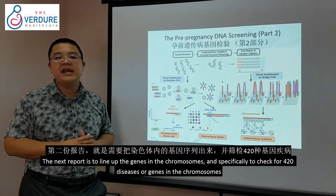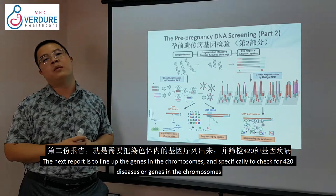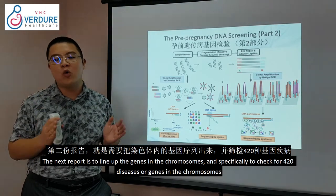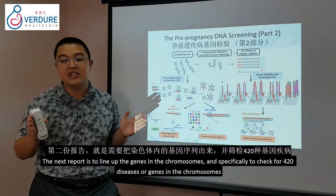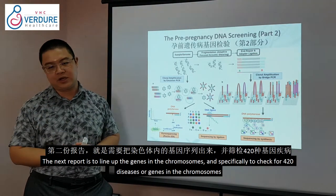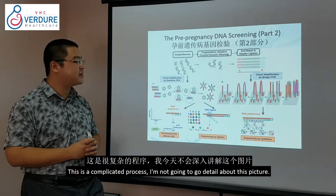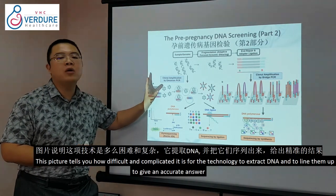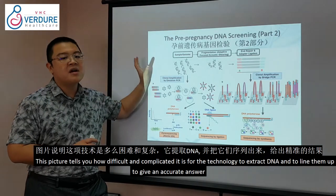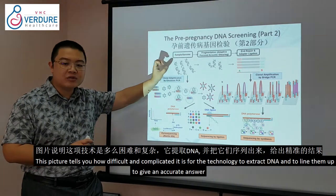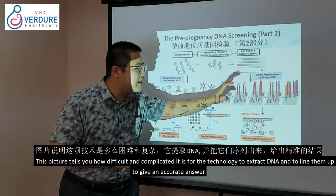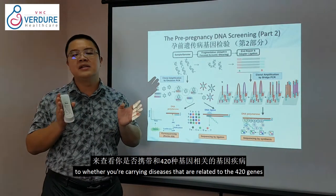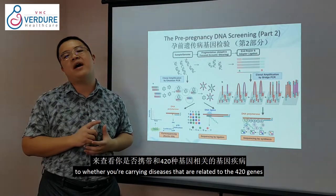The second level lines up genes within the chromosomes to specifically check for 420 diseases — or 420 genes — in the chromosomes. This is a complicated process where technology extracts DNA from chromosomes and lines them up, giving an accurate answer as to whether you carry diseases related to those 420 genes.